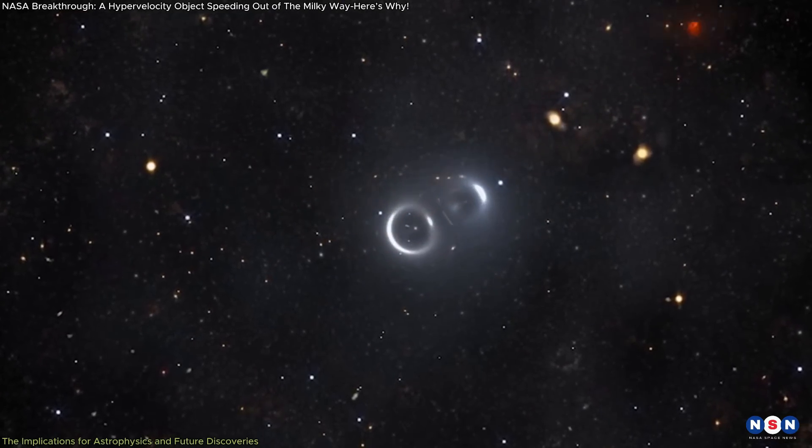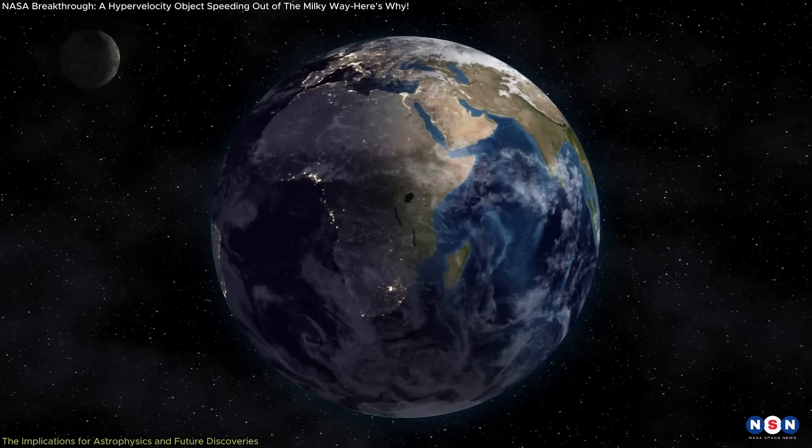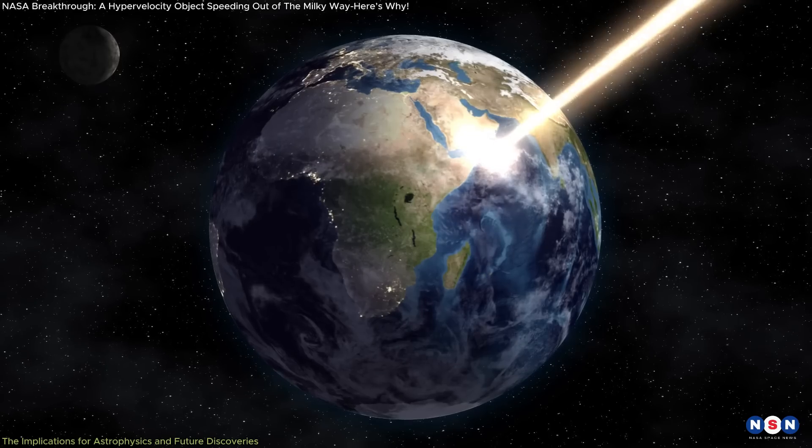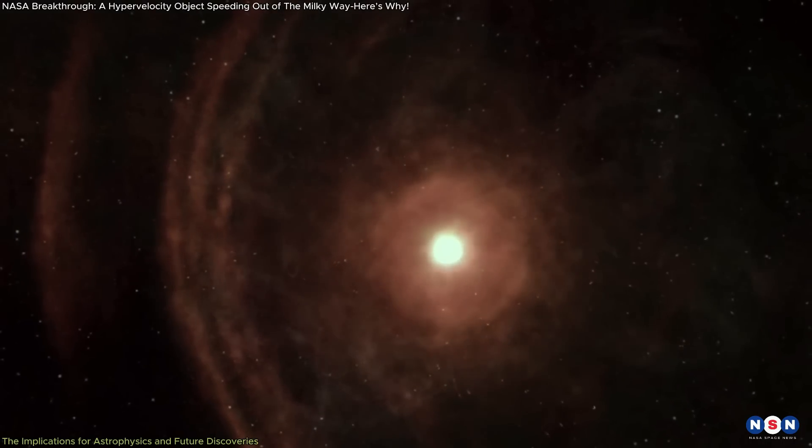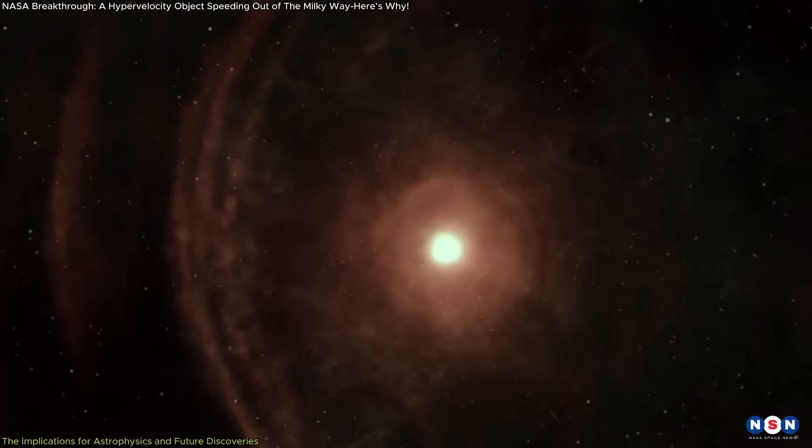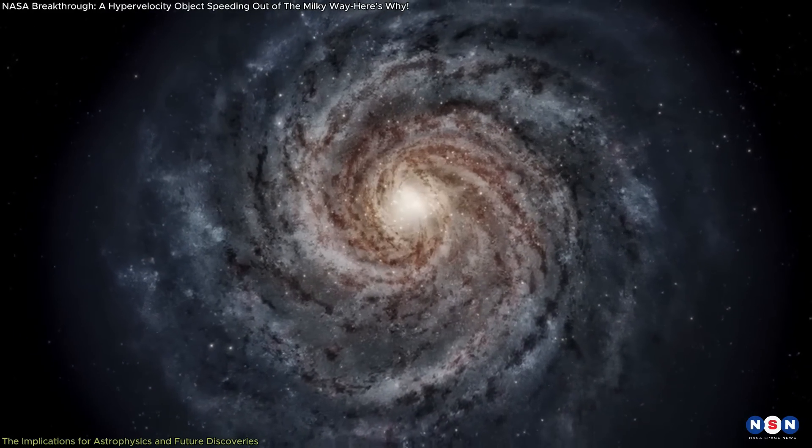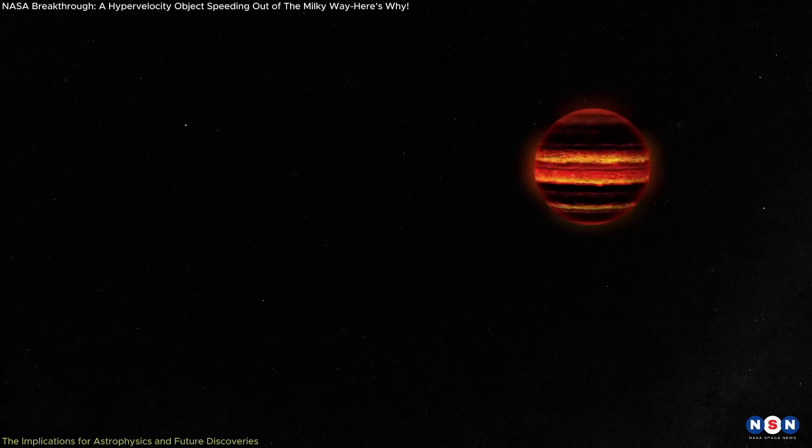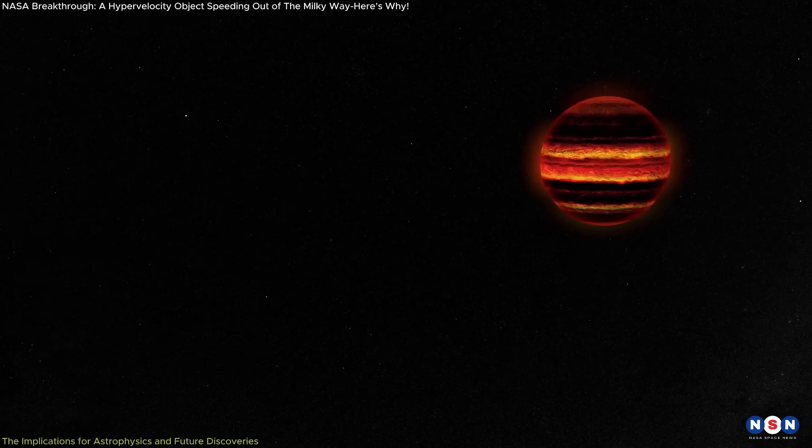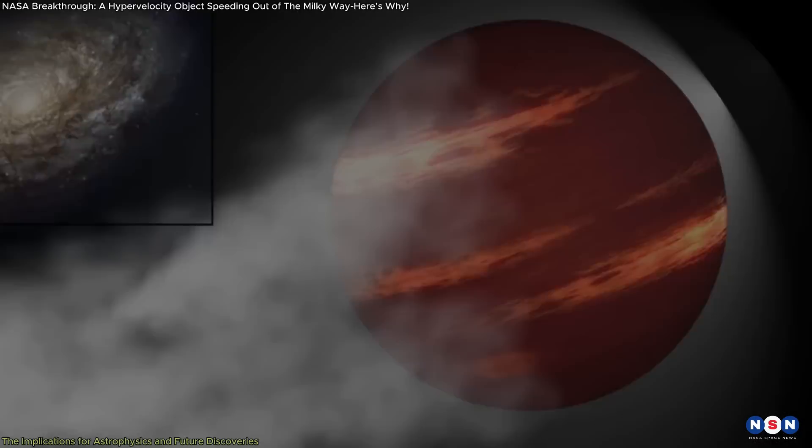But this raises a question: Is it possible that any of these hypervelocity objects could collide with Earth? The answer is that it's highly unlikely. Objects moving at such high speeds, like hypervelocity stars or brown dwarfs, are typically on trajectories that take them out of the Milky Way or through vast, empty regions of space. Nevertheless, studying their movements allows scientists to refine models of stellar behavior and galactic dynamics.